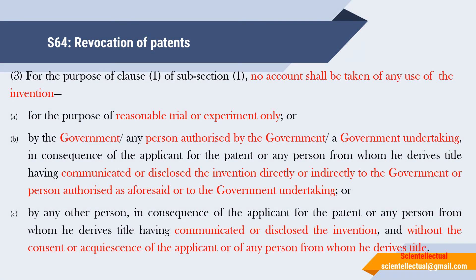No account shall be taken of any use of the invention for the purpose of reasonable trial or experiment only, or by the government or any person authorized by the government or a government undertaking, in consequence of the applicant or any person from whom he derives title having communicated or disclosed the invention directly or indirectly to the government or authorized person, or by any other person in consequence of the applicant having communicated or disclosed the invention without the consent or acquaintance of the applicant or any person from whom he derives title.